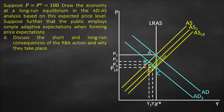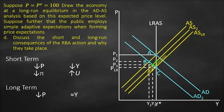The next part of the question: discuss the short-run and long-run consequences of the RBA's action and why they take place. In the short run, our price goes down and our output goes down. Consequently, if price goes down, inflation goes down; if output goes down, our unemployment will be higher. In the long run, we have a lower price. Our output will return to full employment output, our potential output — the full output remains constant at Y*. We have lower inflation. Unemployment will return to our natural rate of unemployment, which is at Y*. This means that prices will not affect output and the natural rate of unemployment in the long run.